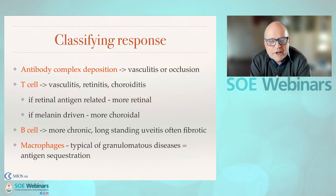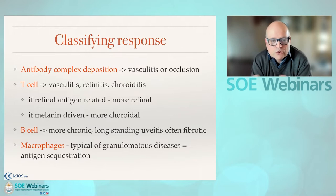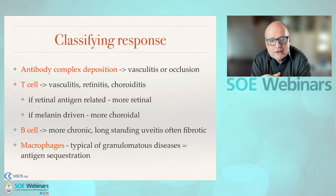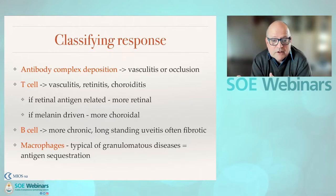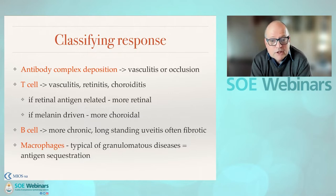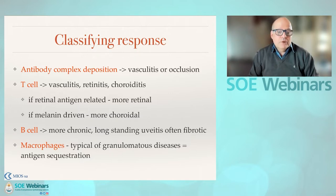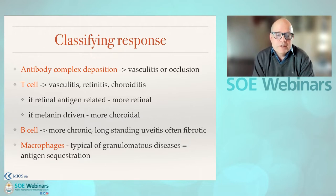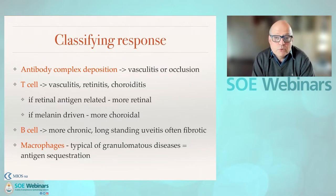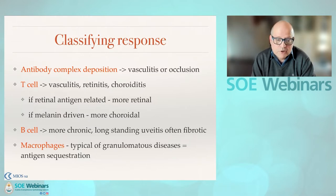It's also useful to classify the immune response. Antibody complexes cause vasculitis or vascular occlusions. T-cells can give you vasculitis, but also choroiditis or retinitis depending on the type of antigen — if it's retina-based, it's more in the retina; if it's melanin-based, it may be more choroidal, as we see in VKH and sympathetic ophthalmia. B-cells can give you a more chronic disease, often leading to fibrosis. Macrophages are obviously involved in granulomatous disease, whether infectious like tuberculosis, or in sarcoidosis.